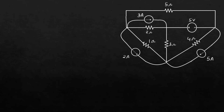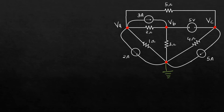Now let me show you this with an example. Suppose this circuit is given. I need to write the nodal equations. Here we have four nodes: node A, node B, node C, and node D. The voltages are Va, Vb, and Vc respectively. I have identified all four nodes. Next, I connect node D to ground, so the voltage at node D becomes zero. I am left with three other nodes: A, B, and C.